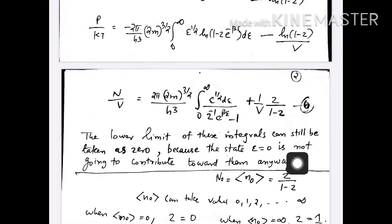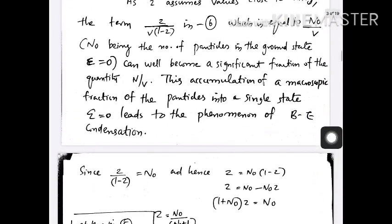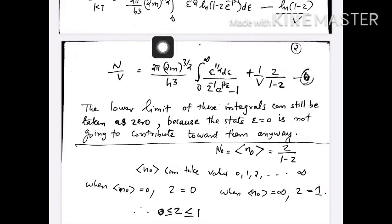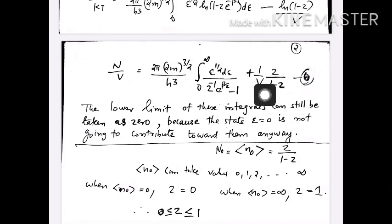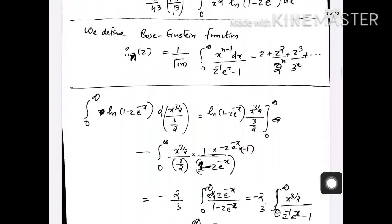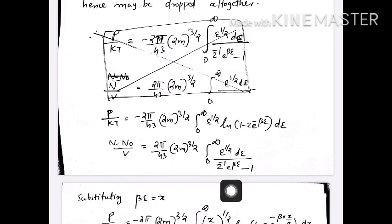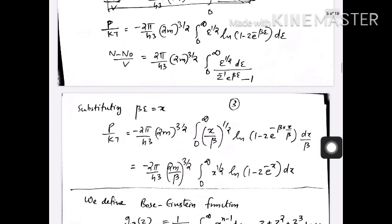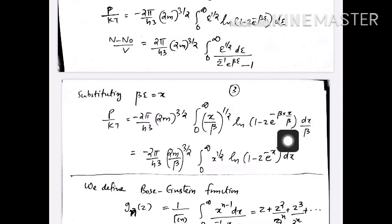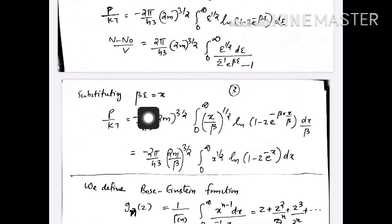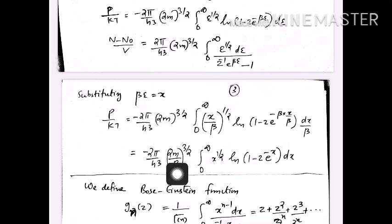However, we cannot do the same neglect in equation 6. There we move the epsilon equal to 0 term — which is z/(1 minus z) = n₀ — to the left hand side, so the equation becomes (N minus N₀)/V equal to the remaining integral. To evaluate this integral, we substitute β·ε = x, so that d·ε = dx/β and ε^(1/2) = (x/β)^(1/2).